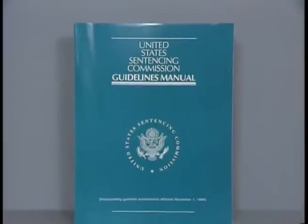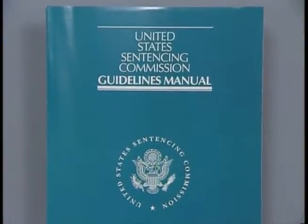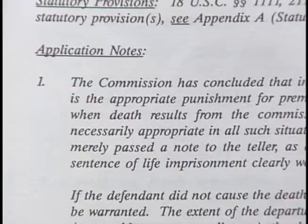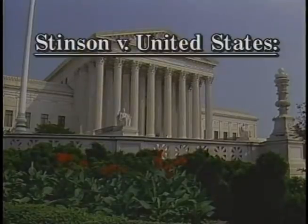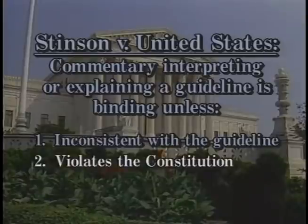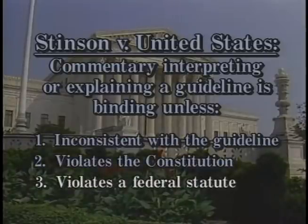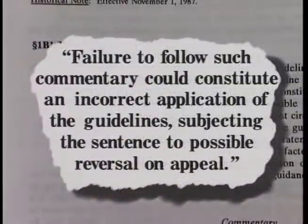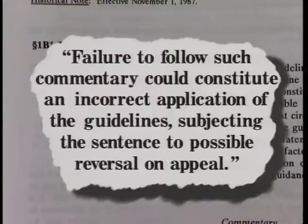The Commission's guidelines and policy statements are contained in the United States Sentencing Commission Guidelines Manual. The manual also includes commentary, which serves as an interpretive aid to the guidelines. Commission commentary often includes application notes defining terms used in guidelines or illustrating conduct governed by them. In Stinson v. United States, the Supreme Court held that commentary interpreting or explaining a guideline is binding on the court unless it is inconsistent with the guideline, violates the Constitution, or violates the federal statute. As both the Stinson decision and Commission guideline 1B1.7 recognize, failure to follow such commentary could constitute an incorrect application of the guidelines, subjecting a sentence to possible reversal on appeal.